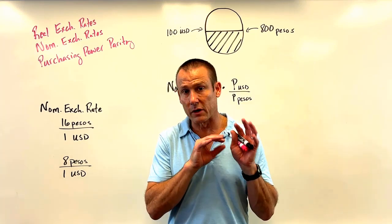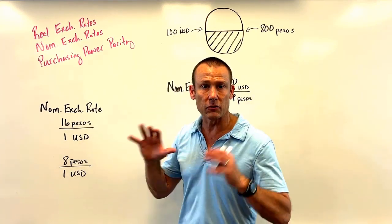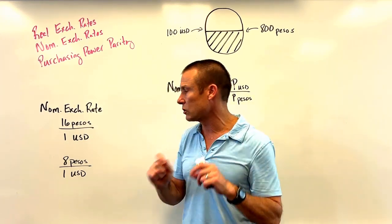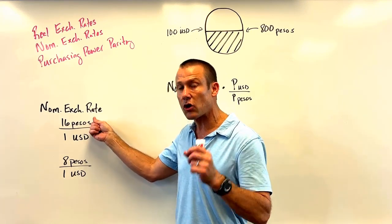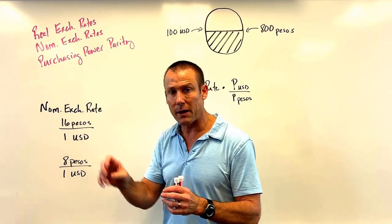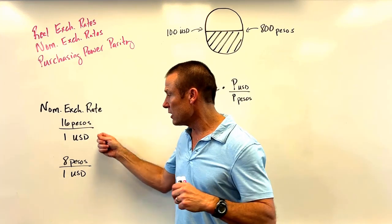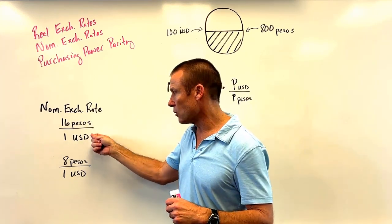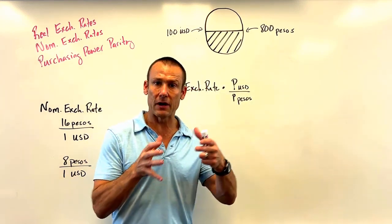If I go to Google and ask for the exchange rate between Mexico and the United States, it might say one USD to 16 pesos — that's a nominal answer. We are defining the value of one USD in terms of a currency amount — 16 pesos. That's a nominal amount. When you define anything in the amount of a currency, you're doing it in nominal terms.